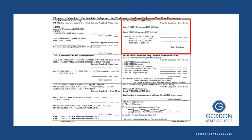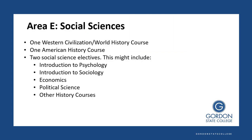Now let's look at Area E, Social Sciences. Everyone will need to take one Western Civ or World History course — these are broken into Part I or Part II, so either works. The same applies to American History: you can take American History I or II. Then you want to pick two Social Science electives. We really encourage Psychology and Sociology, but you might take Economics, Political Science, or any other History course.